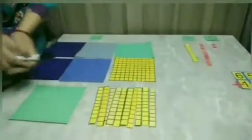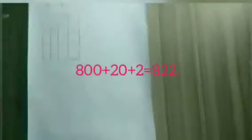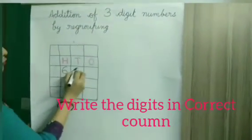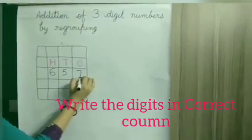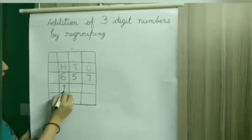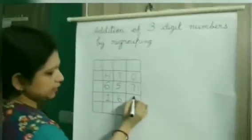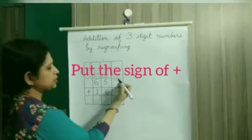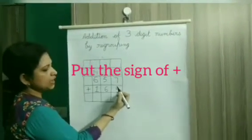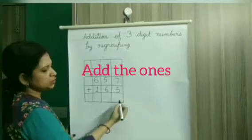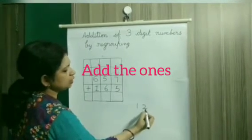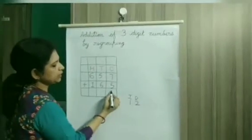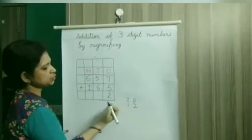Now let's do the same on the board. Our sum for 657 and 165. And we have to add this. First we added the ones column. 7 plus 5 is 12. Now 12 is a two digit number. So we will write the ones under the ones column. That is 2.